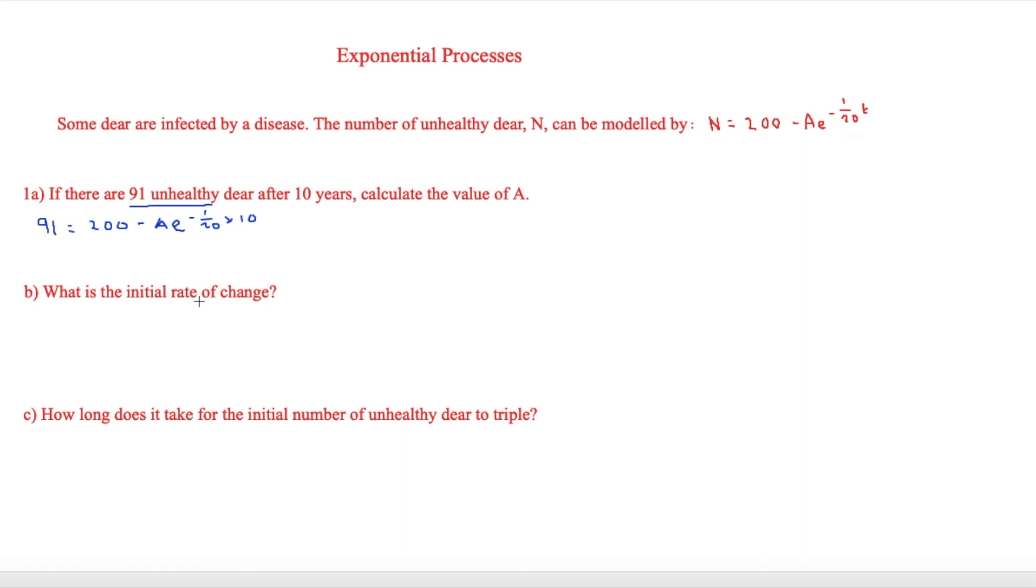If we rearrange this a little bit, we'll make A positive and we can get it to A times e, and then minus 1 over 20 times 10 equals minus 1 half. So A times e to the minus 1 half equals 200 minus 91, which equals 109.